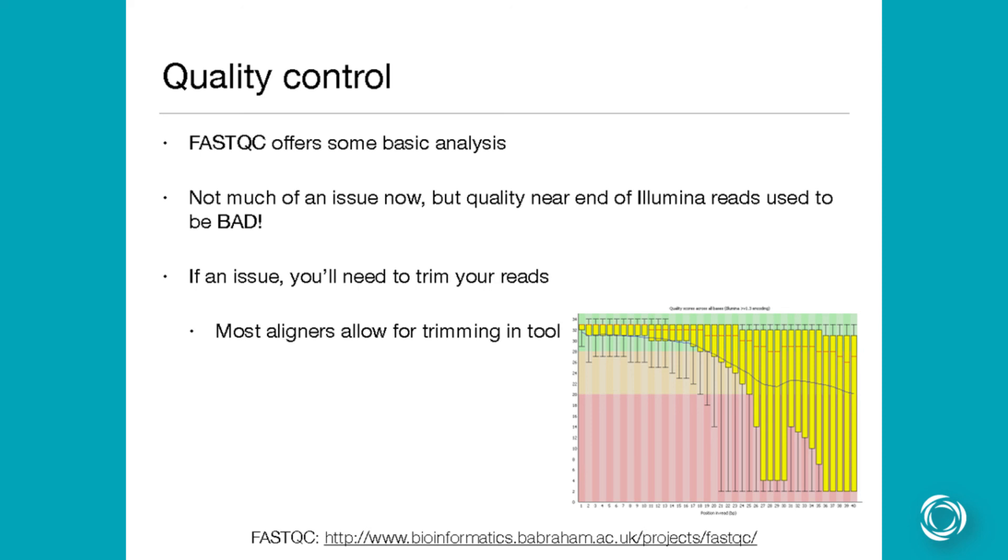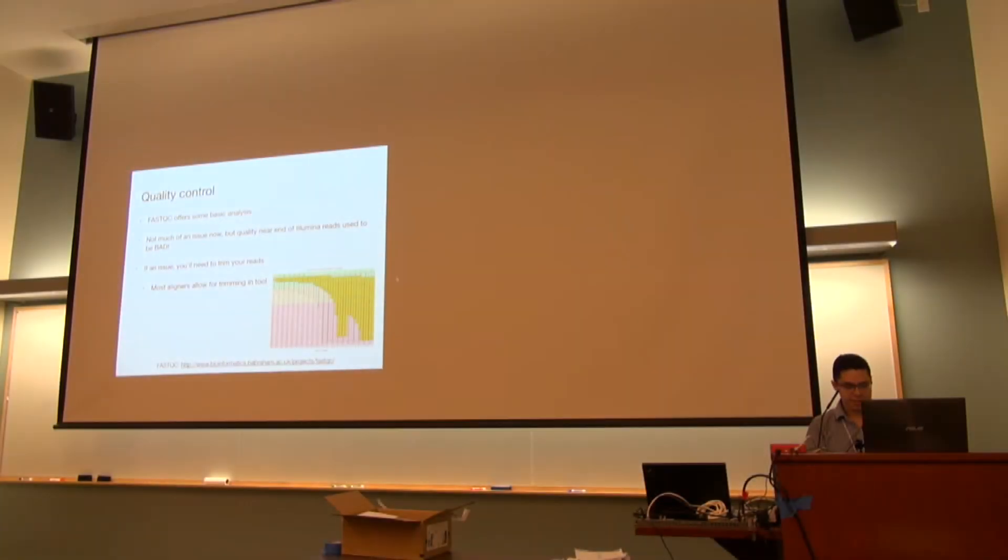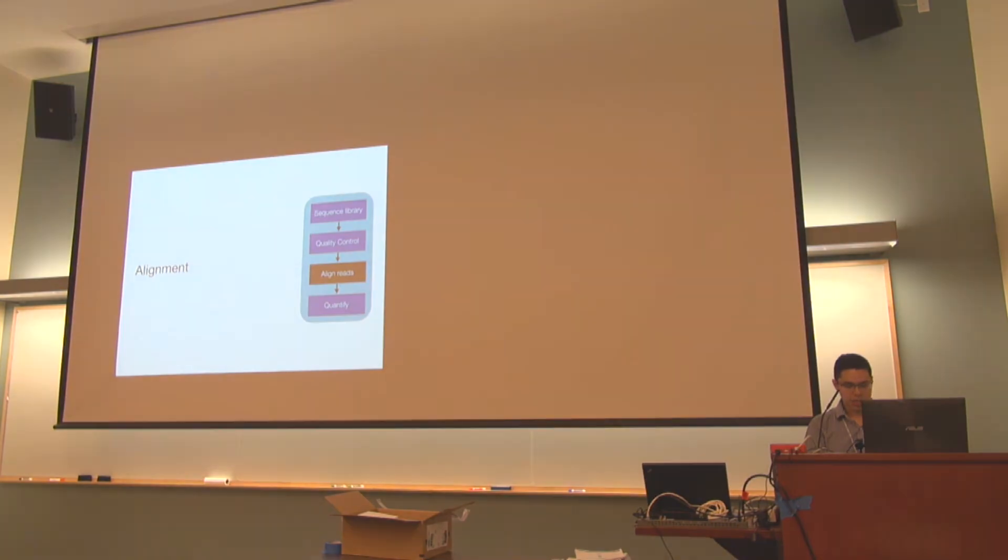The other things that you can check with FASTQC is the complexity of the library, right? So you don't want to start off with a bad library with a lot of PCR rounds because then you'll end up getting a really low complexity library. And this leads to a lot of problems in the analysis.